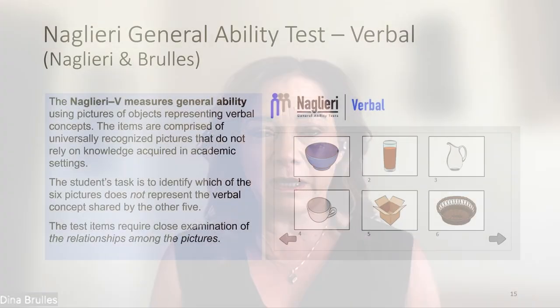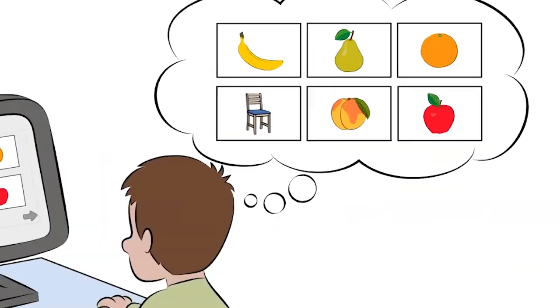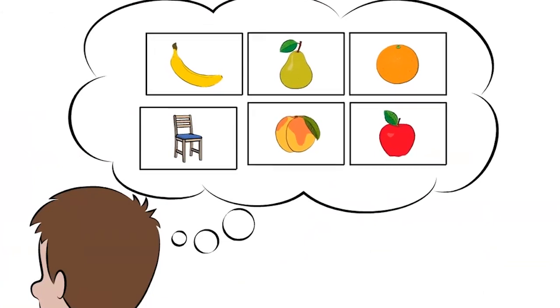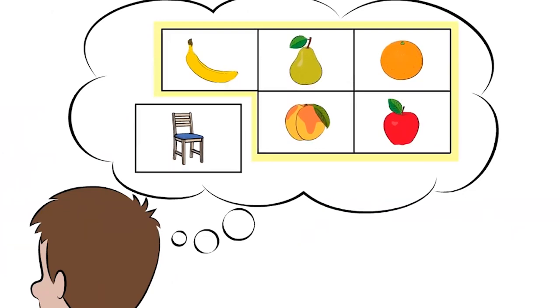Let's discuss the three different tests included in the Nagliari General Ability Test. Dina, can you start with the verbal test? We are looking at general ability regardless of the language that people speak. The premise of the verbal construct is that we're trying to encourage students to find conceptual understandings by looking at the relationships between the items in the test — trying to find similarities, patterns, see relationships, and determine what these have in common the most.